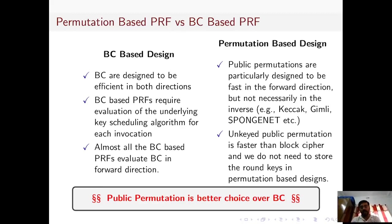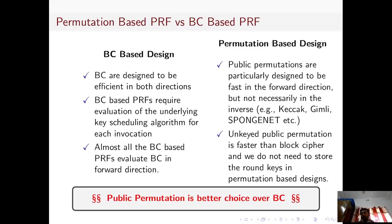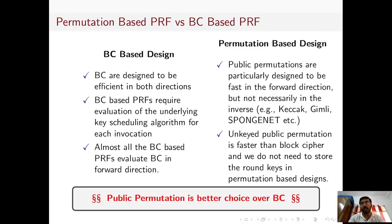A block cipher is basically considered the workhorse of symmetric cryptography and is a very good primitive for different kinds of modes of operation. But beside that, we have another cryptographic object considered to be as good as a block cipher as a primitive in different types of modes of operation, which we call a public permutation — for example, Keccak, Gimli, SpongeBet, etc. Block ciphers as a primitive are designed to be efficient in both directions, whereas public permutations are particularly designed to be fast in the forward direction but not necessarily in the inverse direction. One important distinguishing characteristic is that when we employ a block cipher in a mode of operation, the underlying key scheduling algorithm needs to be evaluated at each invocation, whereas for a permutation-based design we do not need to invoke a key scheduling algorithm at all.